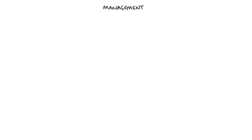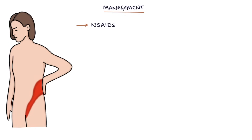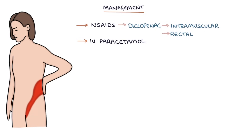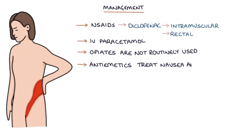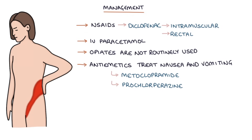Non-steroidal anti-inflammatory drugs are the most effective type of analgesia — for example intramuscular or rectal diclofenac. IV paracetamol is an alternative where NSAIDs are not suitable. Opiates are not very helpful for pain management and are not routinely used. Anti-emetics are used to treat nausea and vomiting — for example metoclopramide, prochlorperazine, or cyclizine. Antibiotics are required if infection is present.